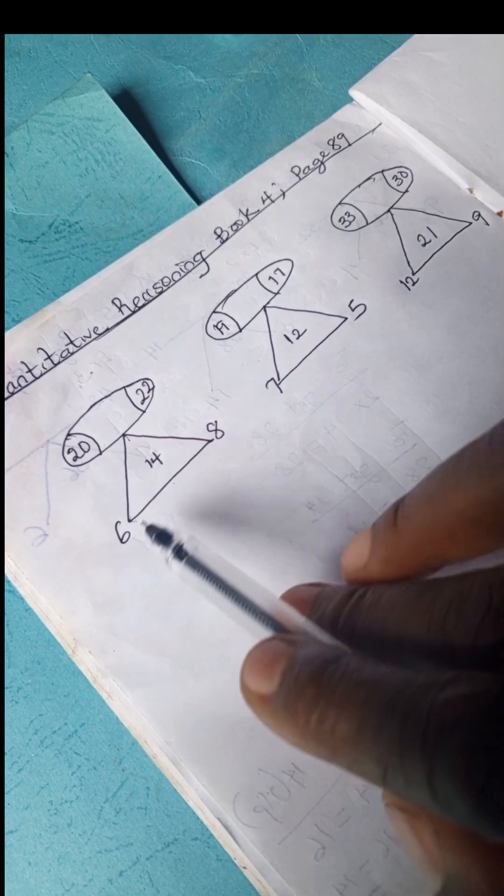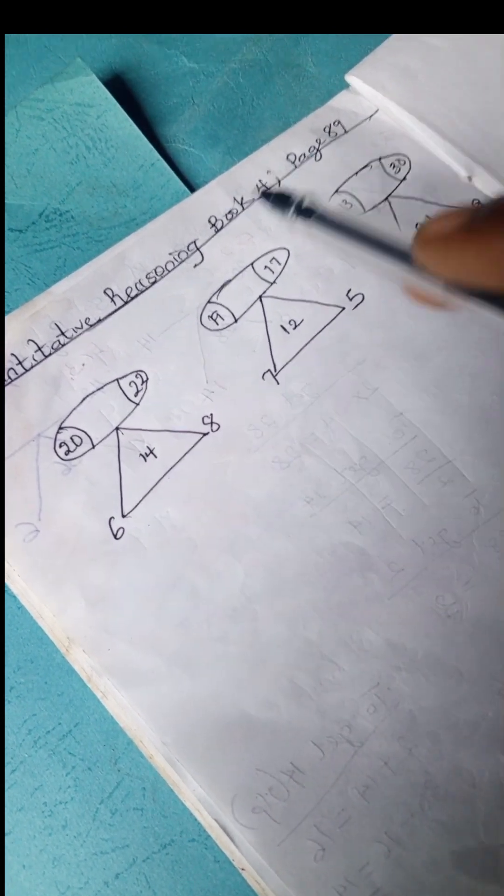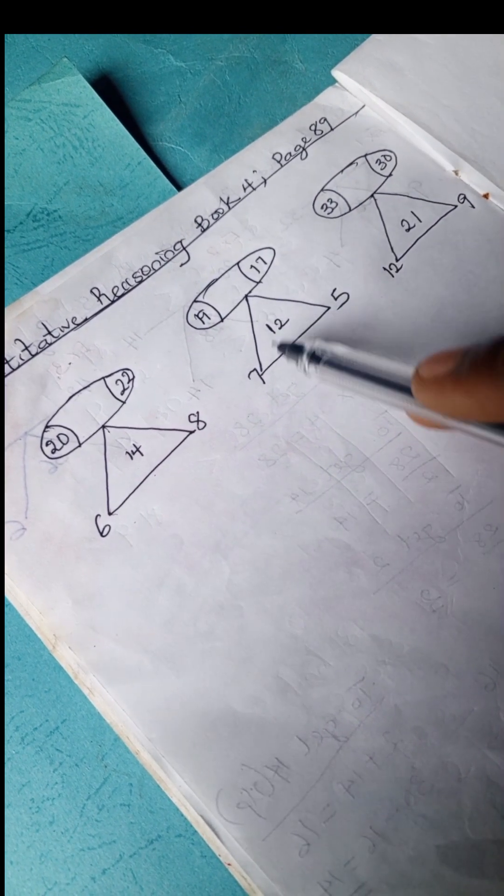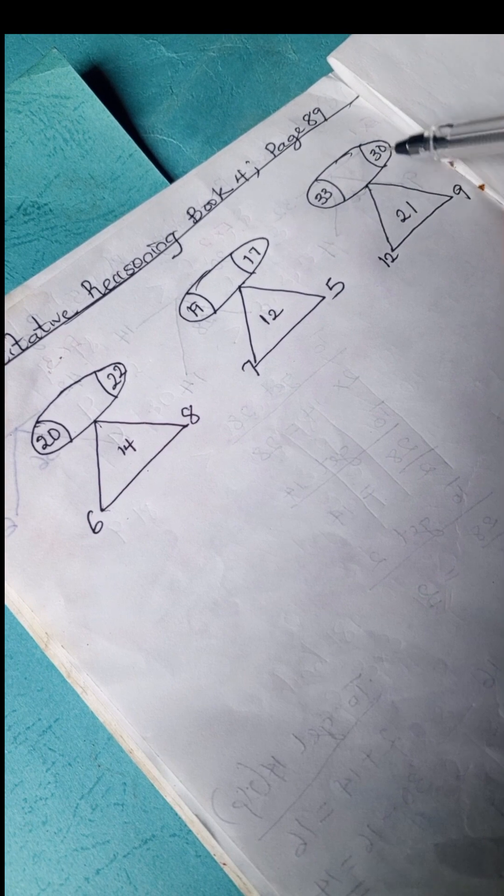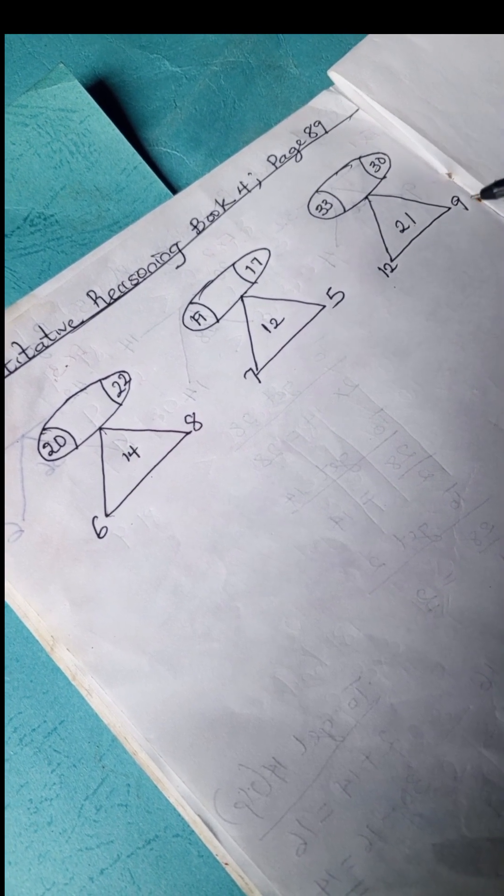Here we have 19, 17, 12, 7, 5. Here we have 33, 30, 21, 12, and 9.